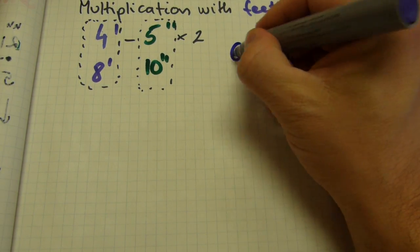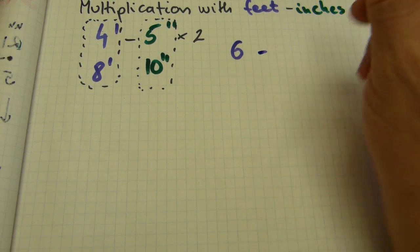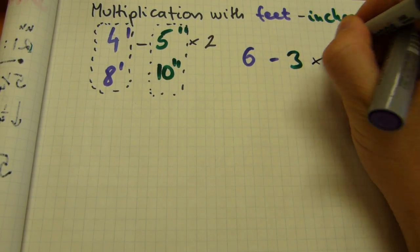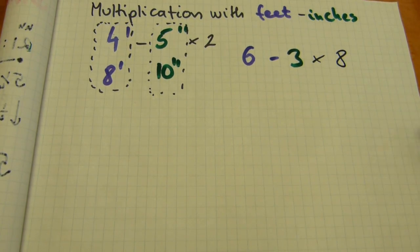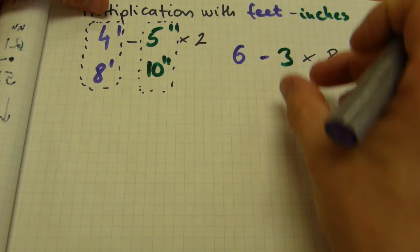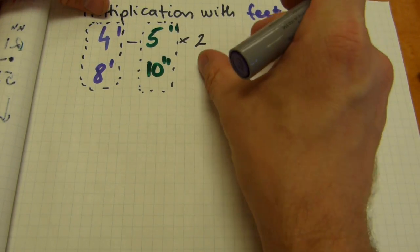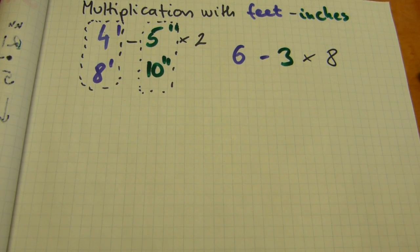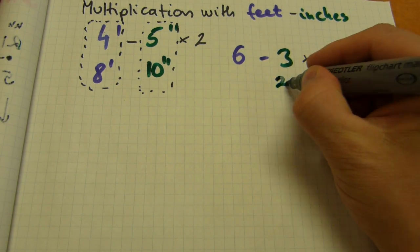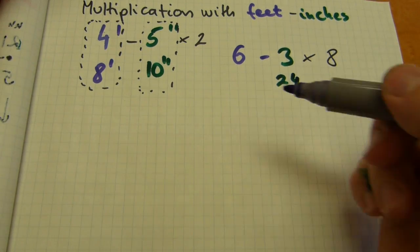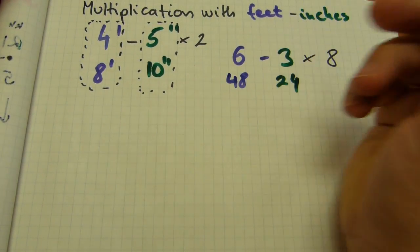Let me show you how that works with another number. How about 6 foot 3 inches multiplied by a bigger number such as 8? The same layout will work. We're gonna have the inches column here and the feet column here. So 3 by 8 of course is 24, so you write down 24 in the inches column. And 6 by 8 is 48.